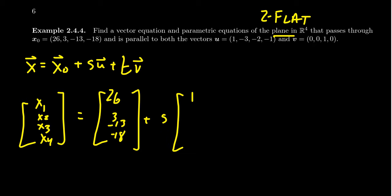S of U, which is (1, -3, -2, -1), and then plus T of V there, which is (0, 0, 1, 0).